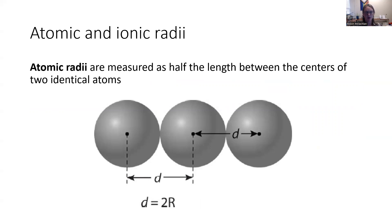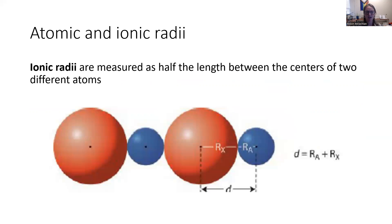The first is the atomic radii, and this is just the radius between two identical atoms. So the distance between each center divided by two. As we know, a lot of bonds are between two identical atoms. Sometimes they're between two differently sized atoms, and we call the radii here, ionic radii.